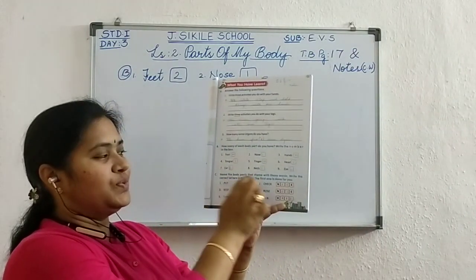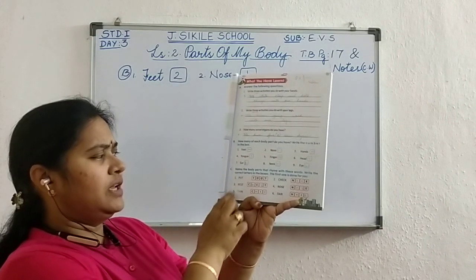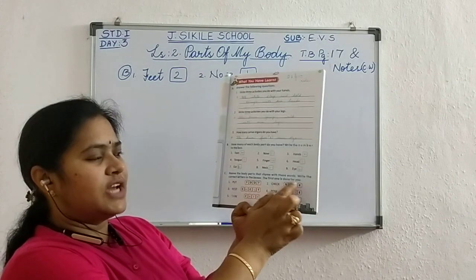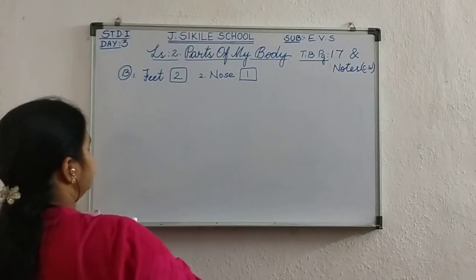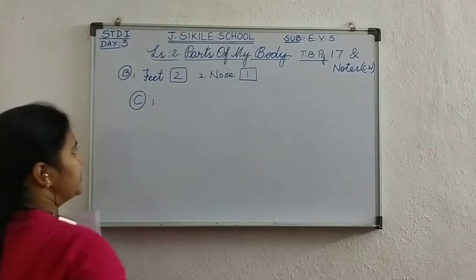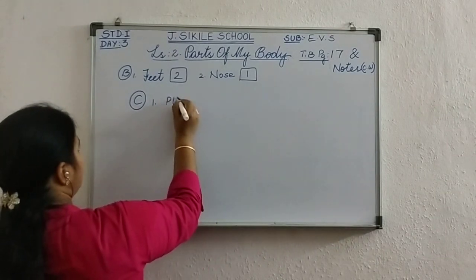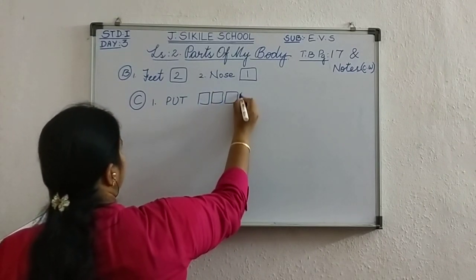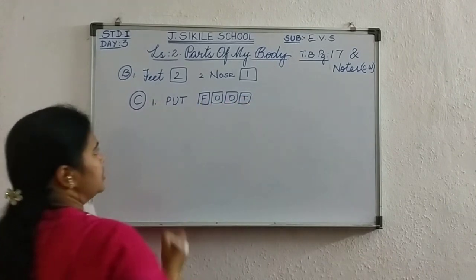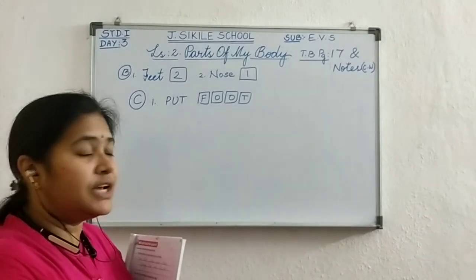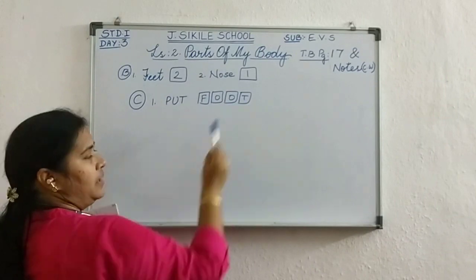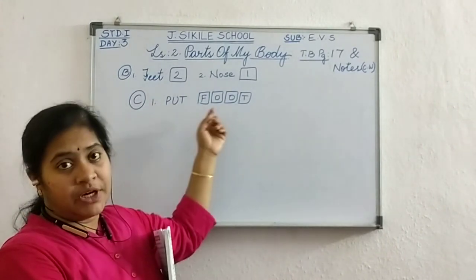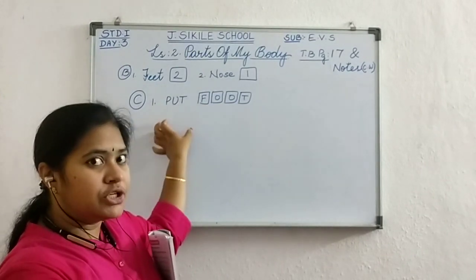Now Exercise C. Here: name the body parts that rhyme with these words and write the correct letters in the boxes — the first one is done for you. The first question gives P-U-T, put. In the boxes: F-O-O-T, foot. Put and foot — in English we learn rhyming words. The end sound is the same, it is rhyming. The spelling is different but the sound rhyming is the same.